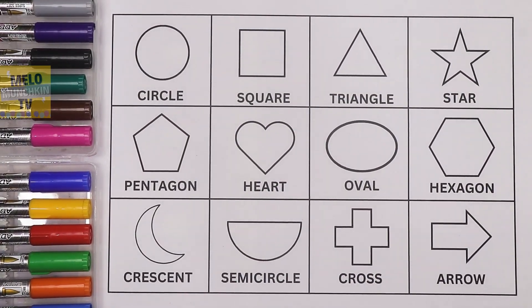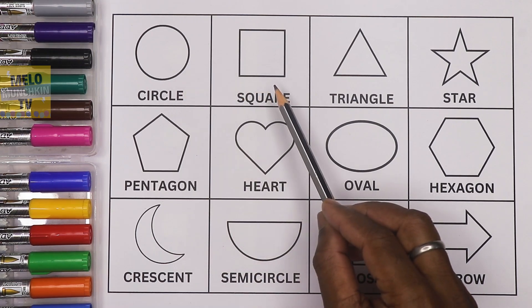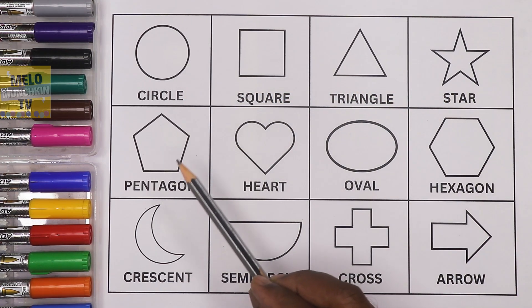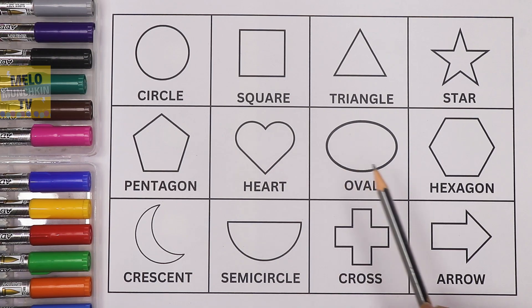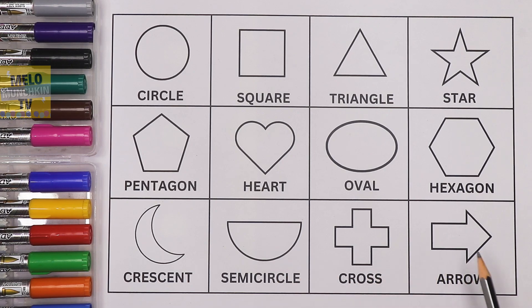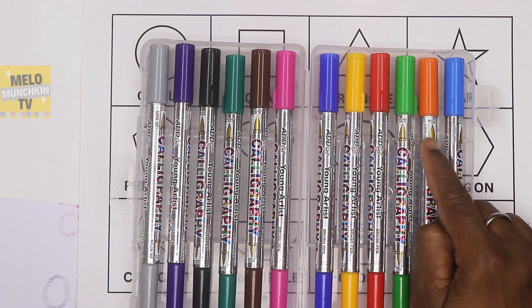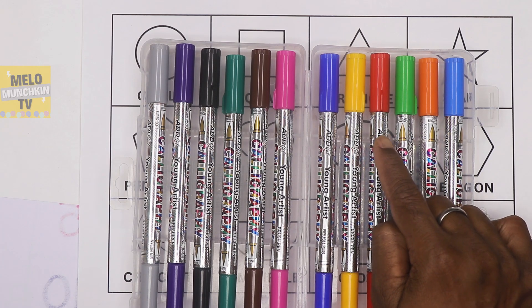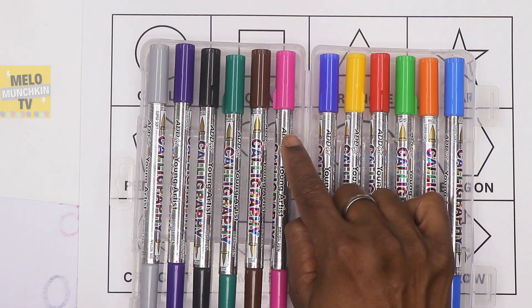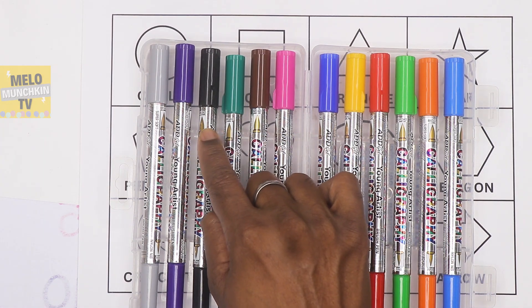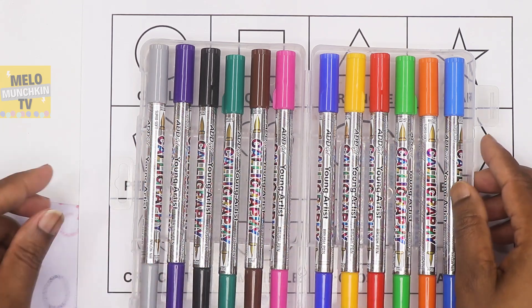Hello kids! Today in this video we'll learn shapes and colors. So how many shapes are there? Can you count and tell me? One, two, three, four, five, six, seven, eight, nine, ten, eleven and twelve. So twelve shapes are there. And how many colors are there? Let's count: one, two, three, four, five, six, seven, eight, nine, ten, eleven and twelve.